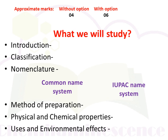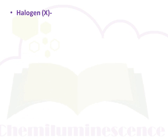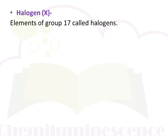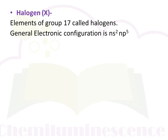Whether halogen derivatives have a positive impact or a negative impact on the environment. Let's first see: what is a halogen? Halogen is represented by the symbol capital X. In the periodic table, Group 17 elements are called halogens. Group 18 elements are the most stable because their outermost shell is completely filled. Halogens belong to Group 17, meaning they require one electron to complete their outermost shell. Hence, the general electronic configuration of halogens is ns², np⁵. They are the most reactive elements in the periodic table.